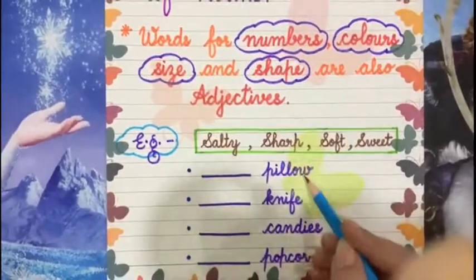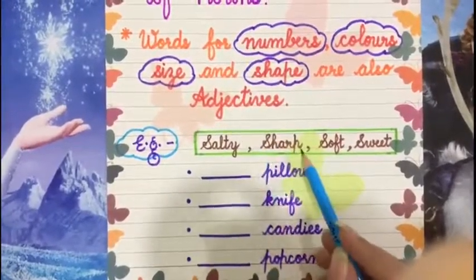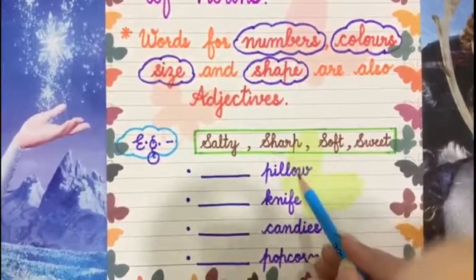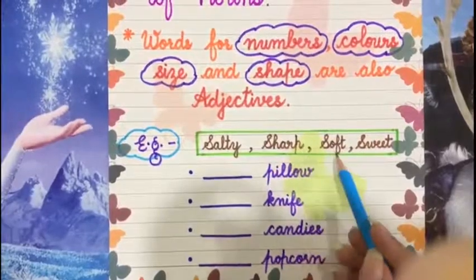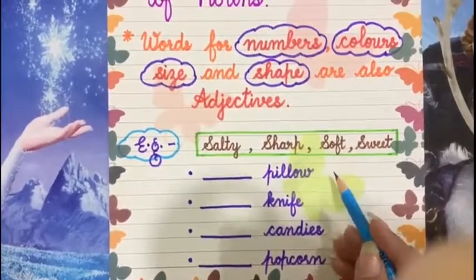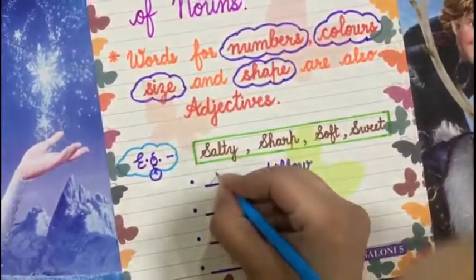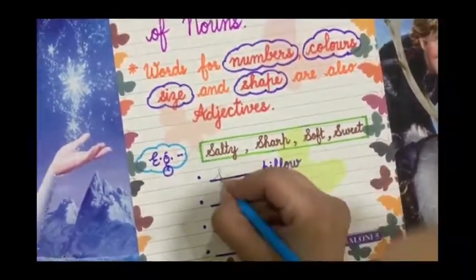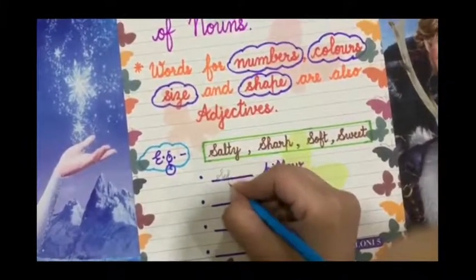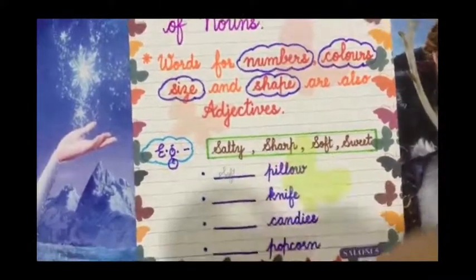First one is pillow. The hints are salty, sharp, soft, sweet. What kind would a pillow be? Soft — pillow is going to be soft. So we will be writing here: soft pillow.